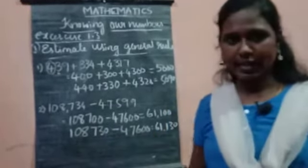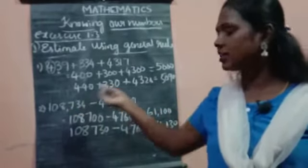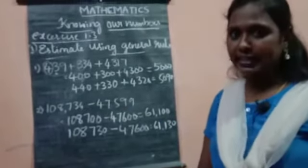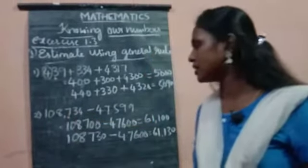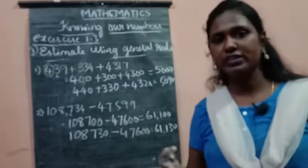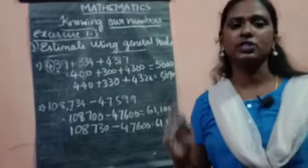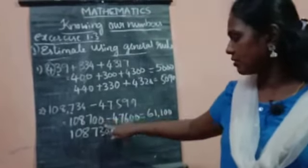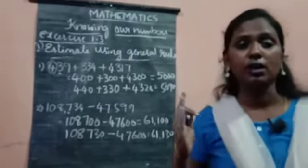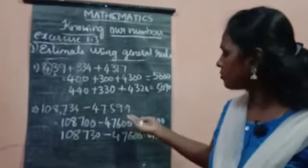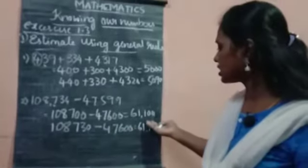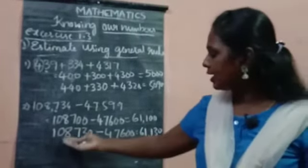Let us see another example. Here, 18,734 minus 47,599. First, see the 100 place. That is 700. After 700, 34 is there. What you have to write? Write just 700. So 18,700 minus 47,599, which is very close to 600, so I have taken 47,600. If you subtract from this, you will get 61,100.